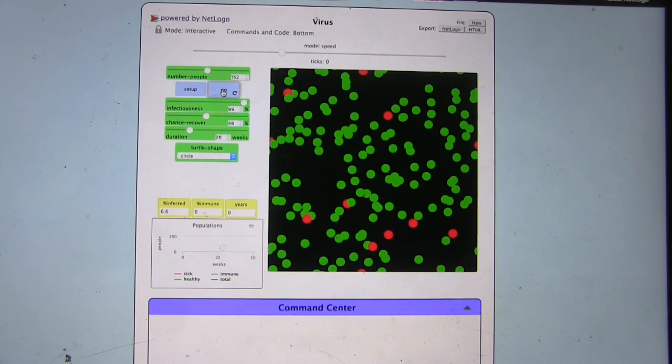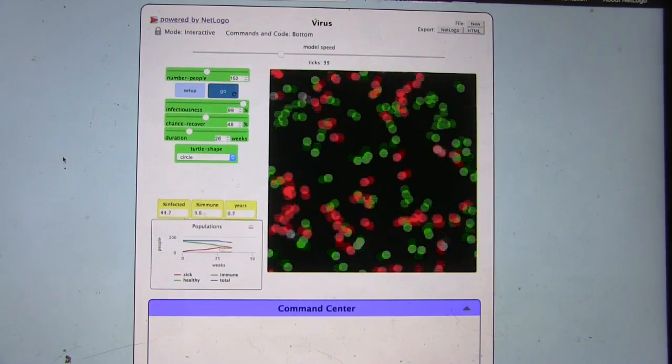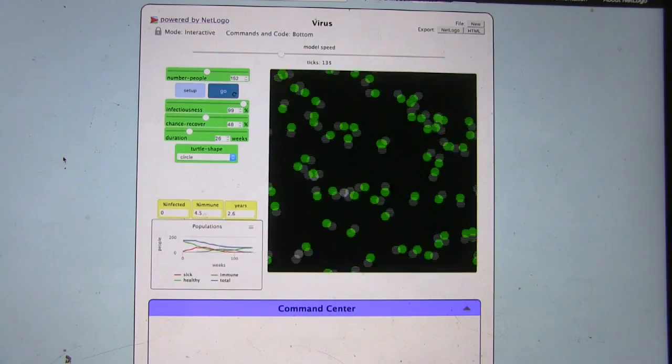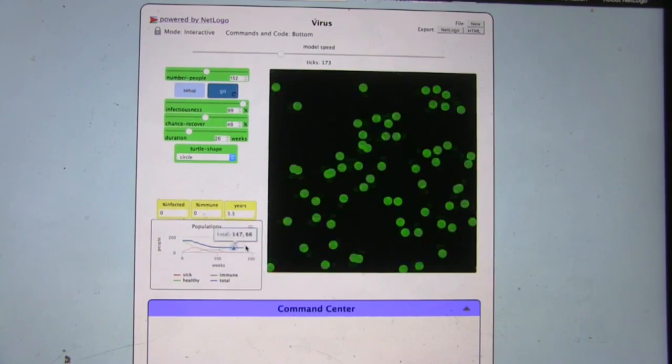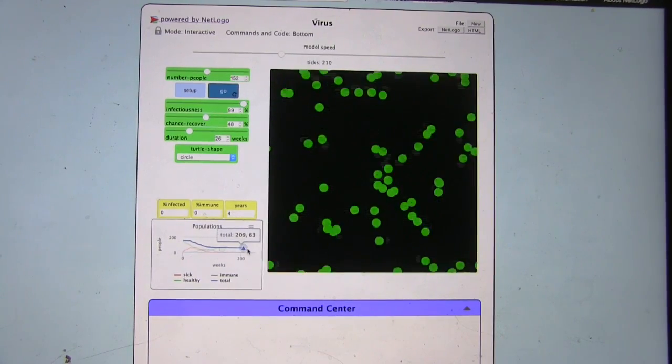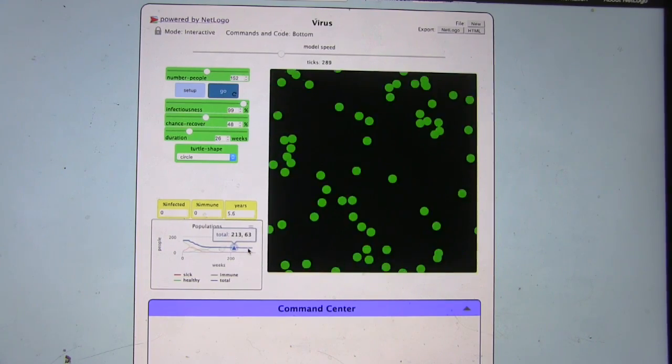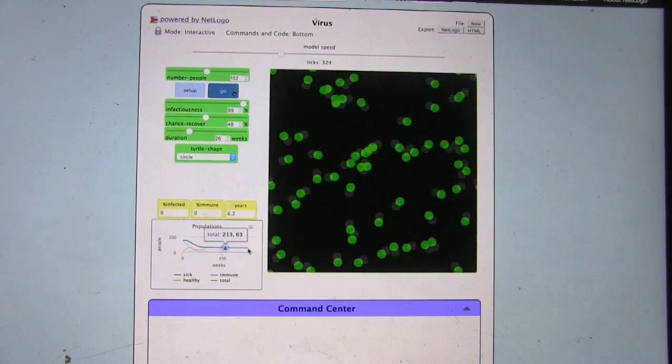Okay, so let's see. And there are people who just don't get infected. Yeah, so now this time it looks like we started with 150 and we're down to 60. Oh, so actually more people are about the same. It's about the same, yeah.